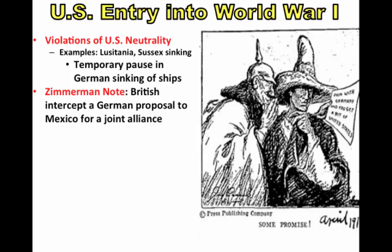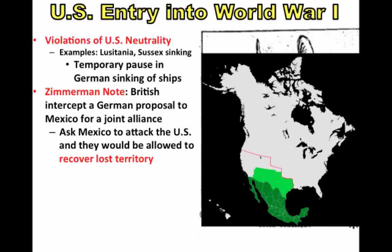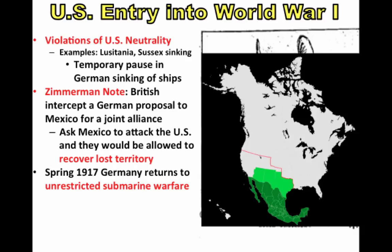However, Germany proceeds to commit other acts which angers many people in America. There is the Zimmermann Note you should know about, where the British intercept a German proposal to Mexico calling for a joint alliance. Germany is asking Mexico to attack the United States, to form an alliance, and they would be allowed to recover lost territory — that territory shown in light green. This obviously causes a lot of anger in the United States. And in spring of 1917, Germany returns to unrestricted submarine warfare.